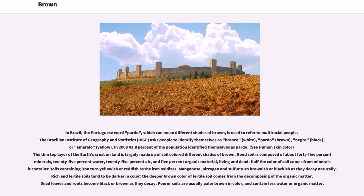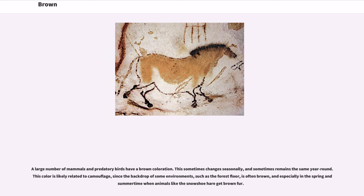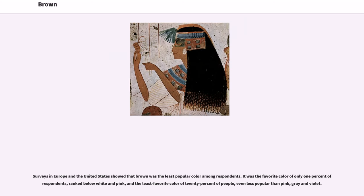A large number of mammals and predatory birds have a brown coloration. This sometimes changes seasonally and sometimes remains the same year round. This color is likely related to camouflage, since the backdrop of some environments such as the forest floor is often brown, and especially in spring and summer when animals like the snowshoe hare get brown fur. Surveys in Europe and the United States showed that brown was the least popular color among respondents — the favorite color of only 1% of respondents, and the least favorite color of 20% of people, even less popular than pink, gray and violet.